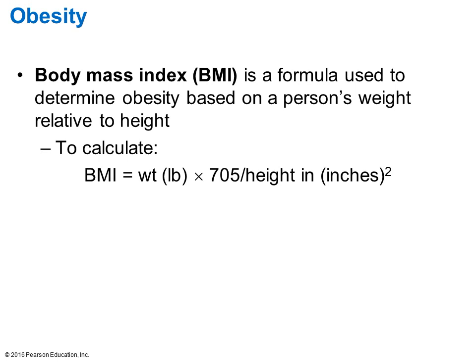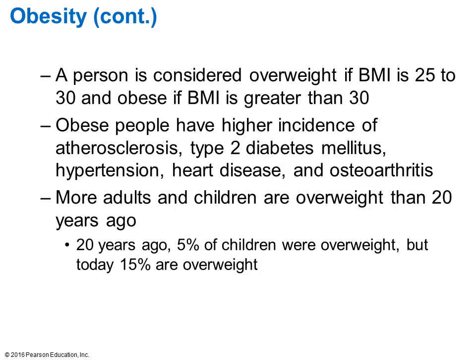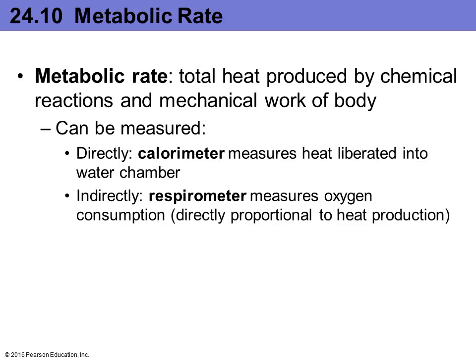Body mass index is a formula used to determine if a person is overweight or obese based on weight versus height. If BMI is 25 to 30, they're considered overweight; greater than 30 is considered obese. Someone who is obese has a much higher risk of developing additional health issues. A higher percentage of people are overweight now than 20 to 30 years ago, due to changes in lifestyle, eating habits, and food proportions.